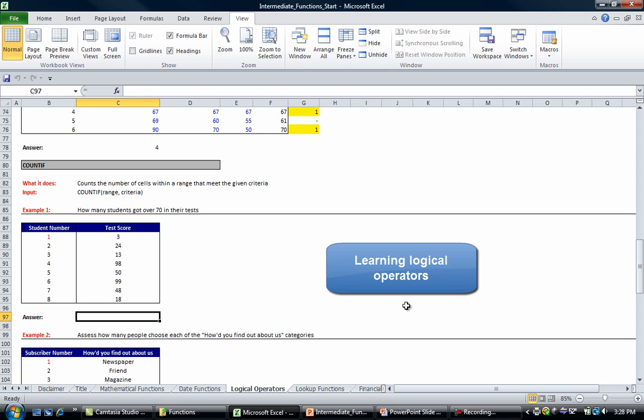The first example says how many students got over 70% in their tests. So we're going to go equals COUNTIF, and we're going to select the range comma, and we're going to go criteria is over 70 and press enter.